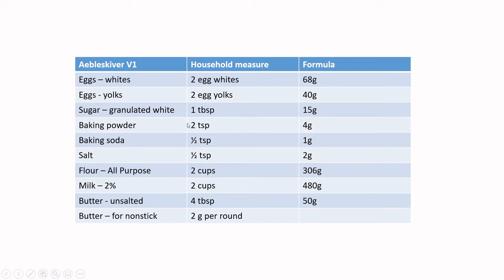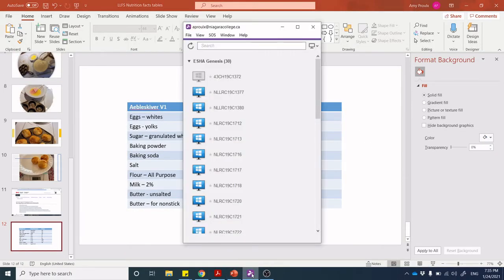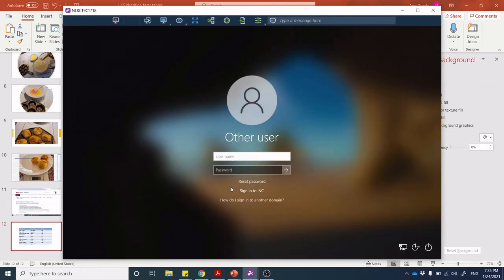We did a video before on taking a recipe and converting it from a household measure into a formula. I didn't put in my butter for non-stick because I'll adjust that as I build out my recipe. Now it's time to jump into the ESHA software. There's a whole set of instructions on how to access Splashtop — I'm not going to rehash all of that. Please watch that video separately if you're accessing Splashtop for the first time.